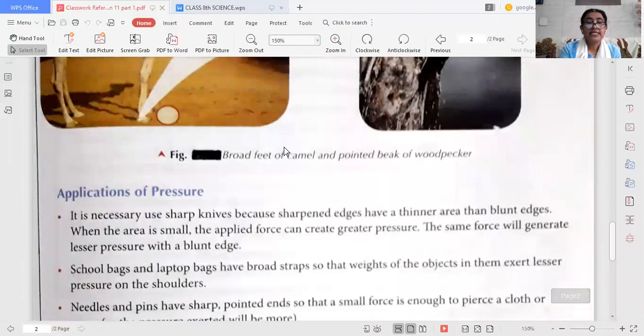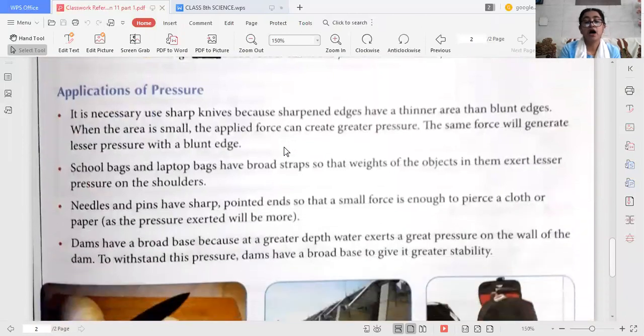Now we can see the applications of pressure. It is necessary to use sharp knives. Why? Because if a sharp edge is there, the surface area is very small. Then it will apply a greater pressure. The applied force can create greater pressure. The same force will generate lesser pressure with a blunt edge.